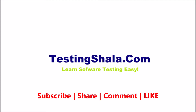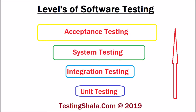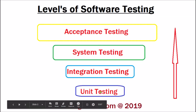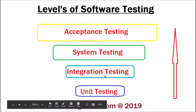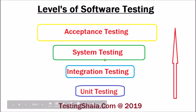Let's move on to understand what are the four levels of software testing. The first level is unit testing, the second level is integration testing, the third level is system testing, and the fourth level is acceptance testing. Let us understand each one by one.